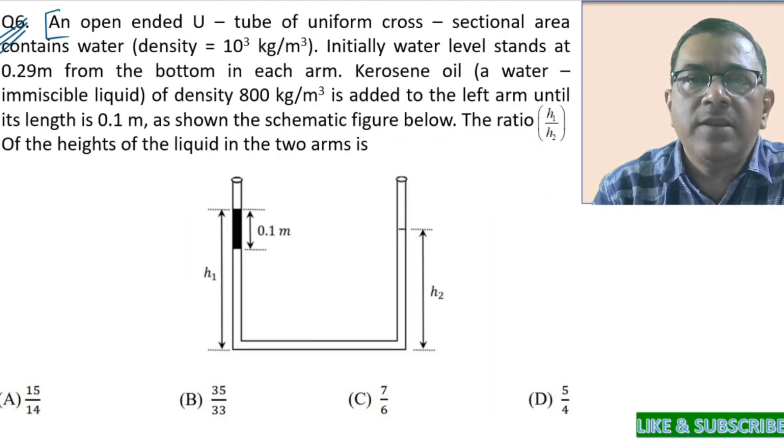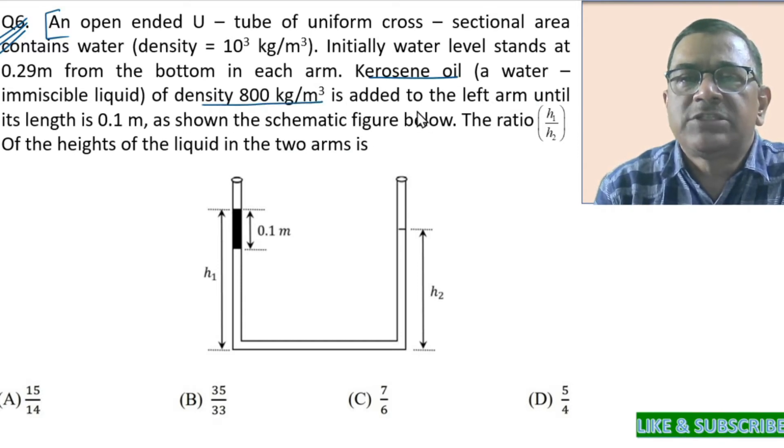Now, what has been done? Kerosene oil of density 800 kg per meter cube is added to the left arm until its length is 0.1 meter.